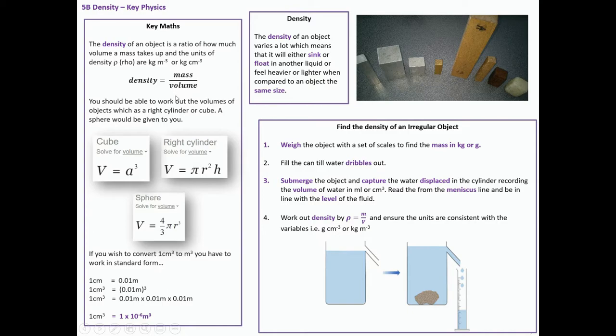Density is mass over volume. You should be able to work out the volumes of objects such as a right cylinder or cube. A sphere formula would be given to you. You should be able to convert centimeters cubed to meters cubed. The easy way is to imagine that one centimeter is 0.01 meters. If I cube that, I get 0.01 times 0.01 times 0.01, which is 1 times 10 to the minus 6 meters cubed for every centimeter cubed. You remove the centimeter cubed from your equation and plop that in.